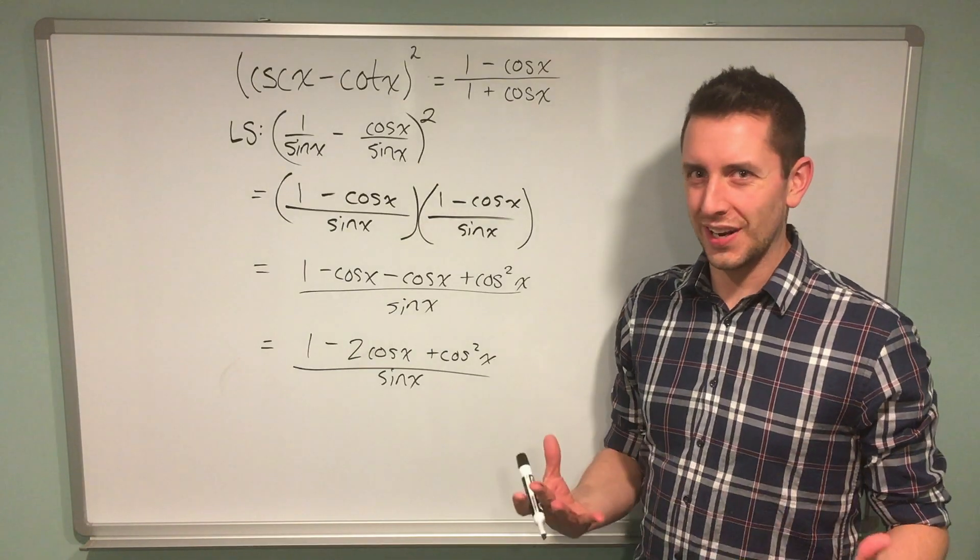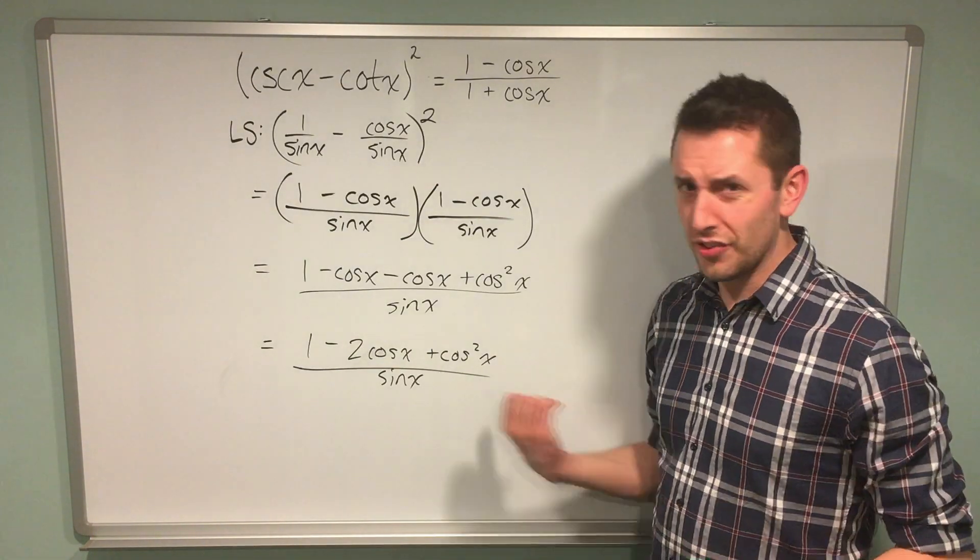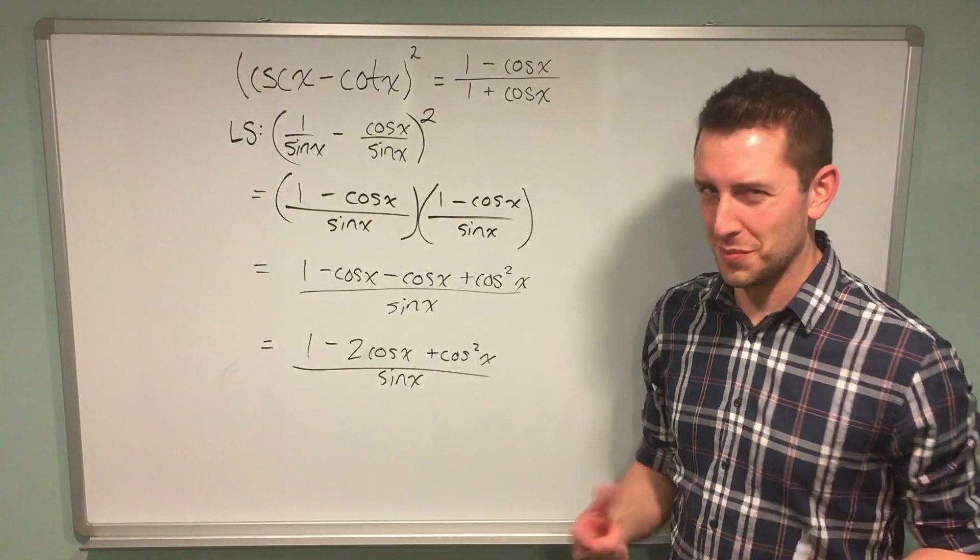This is that inevitable part in every trig identity problem where you look at what you have and have absolutely no idea how to progress. This is also the part where you use a very bizarre trick that you'd never really know about unless I showed you in this video, which I'm doing right now.